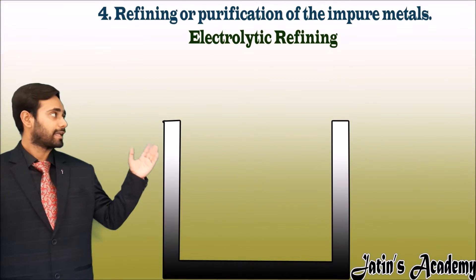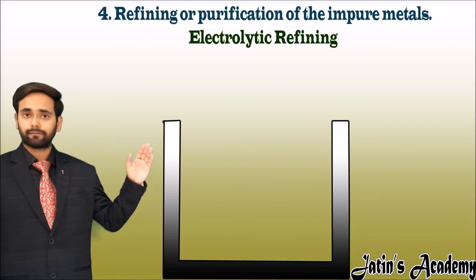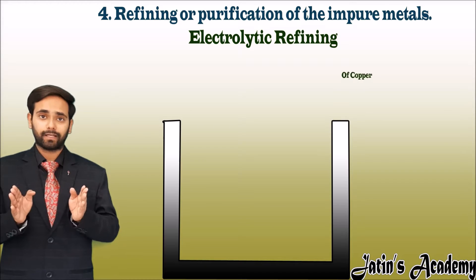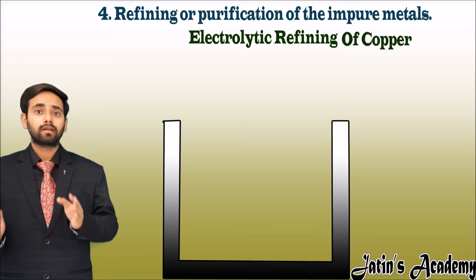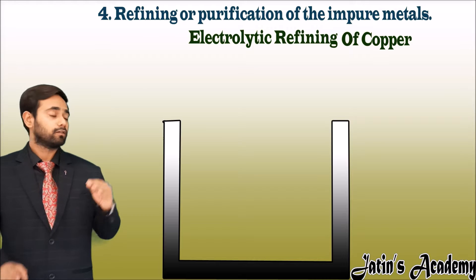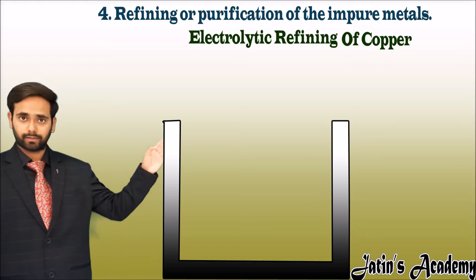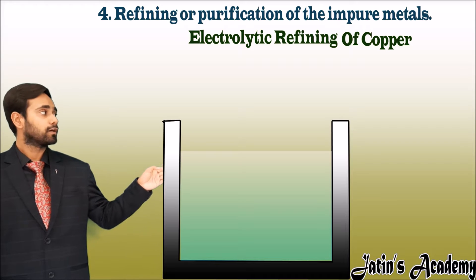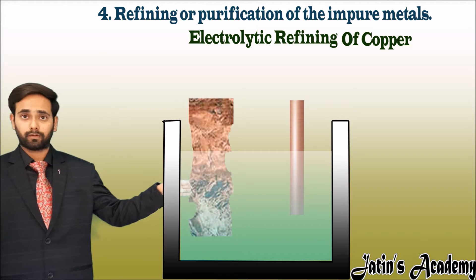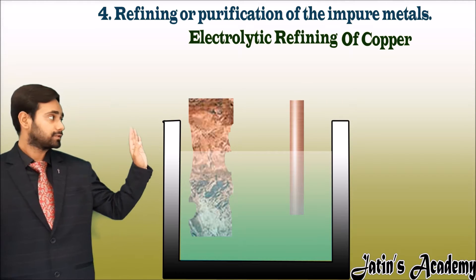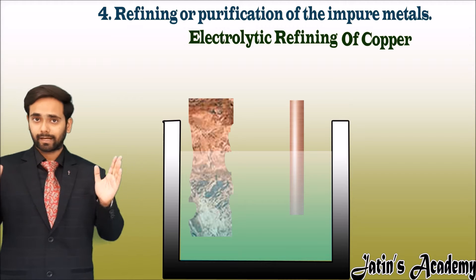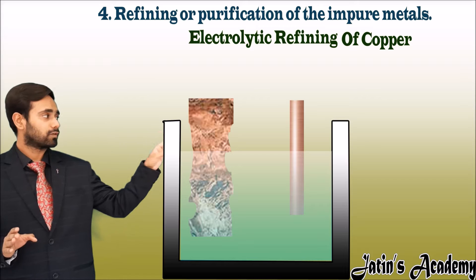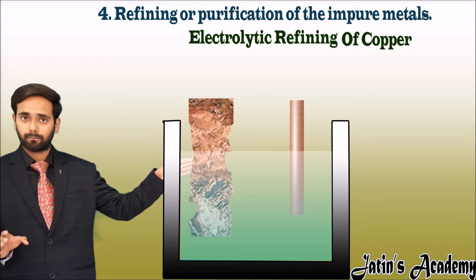Let's understand electro refining with an example. Let's say we are refining copper metal. In order to refine the metal, first take a beaker and add water in it. Now take two pieces of copper. One piece, which is larger in size, is actually impure copper which we have to purify, and there is one small strip of copper.